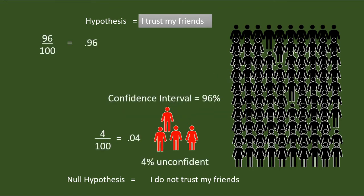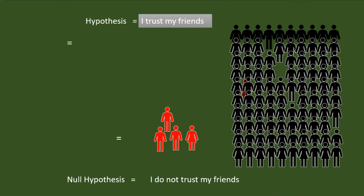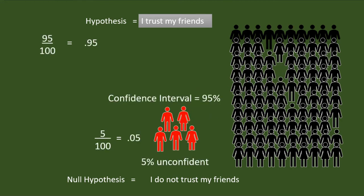Doubts about 4 of my friends? The confidence interval went down further to 96%. Probability of accepting the null hypothesis increased to 4%. Still, I trust 96% of my friends, so I am with the statement: I trust my friends. Now, 5 of my friends are in the blacklist. Confidence interval became 95%. I am in a dilemma — should I accept the null hypothesis because I am not trusting 5% of them? On the other side, it is 95%, so I will continue with my statement: I trust my friends.